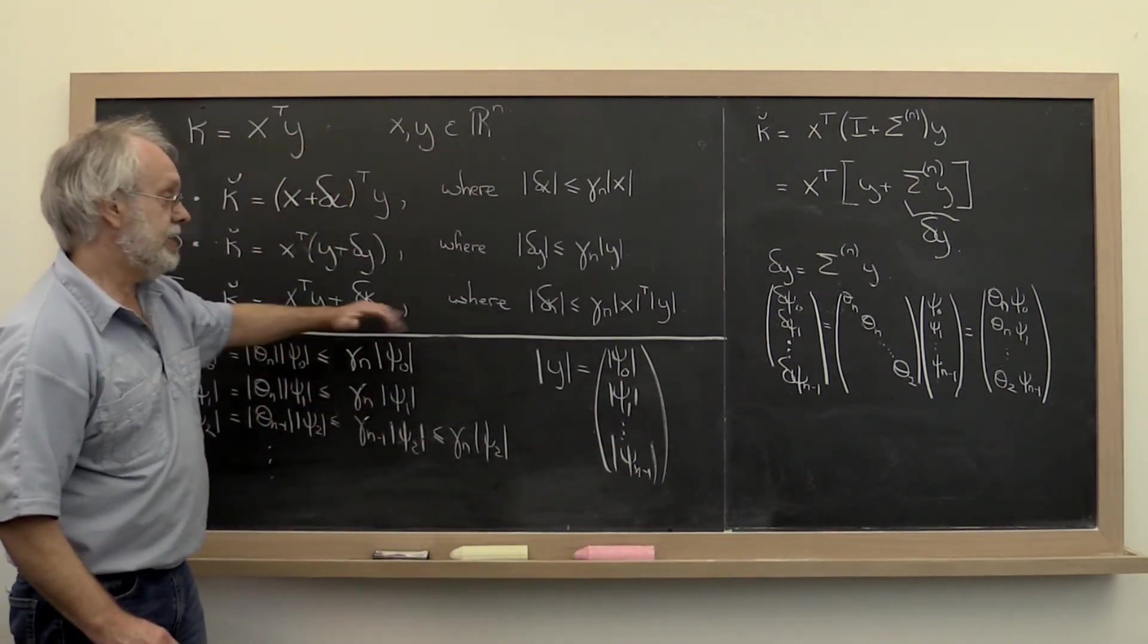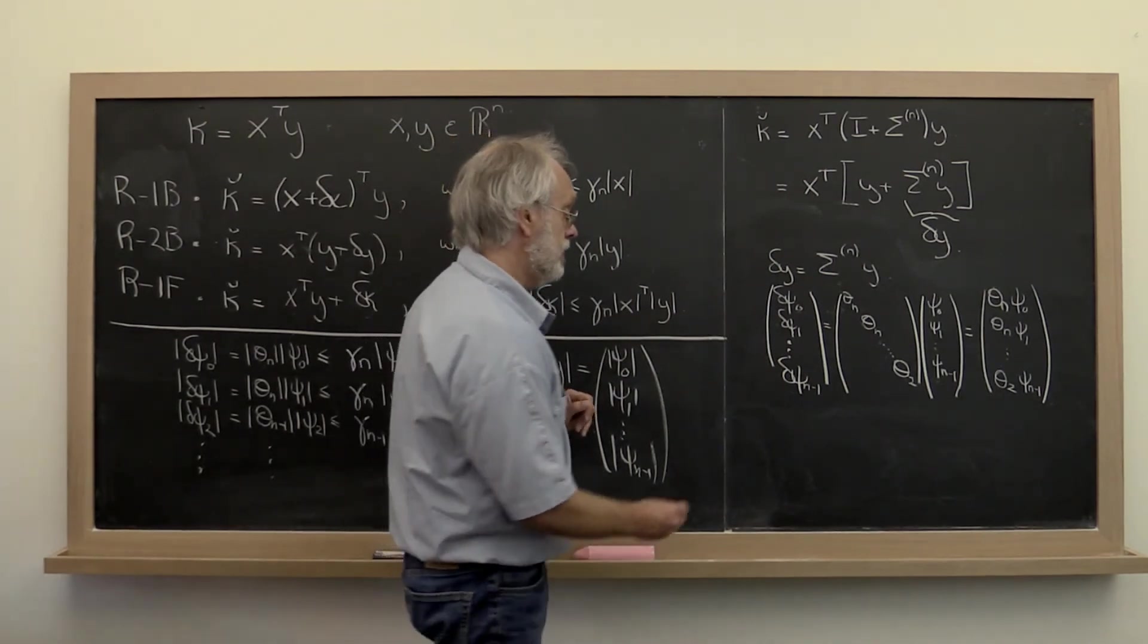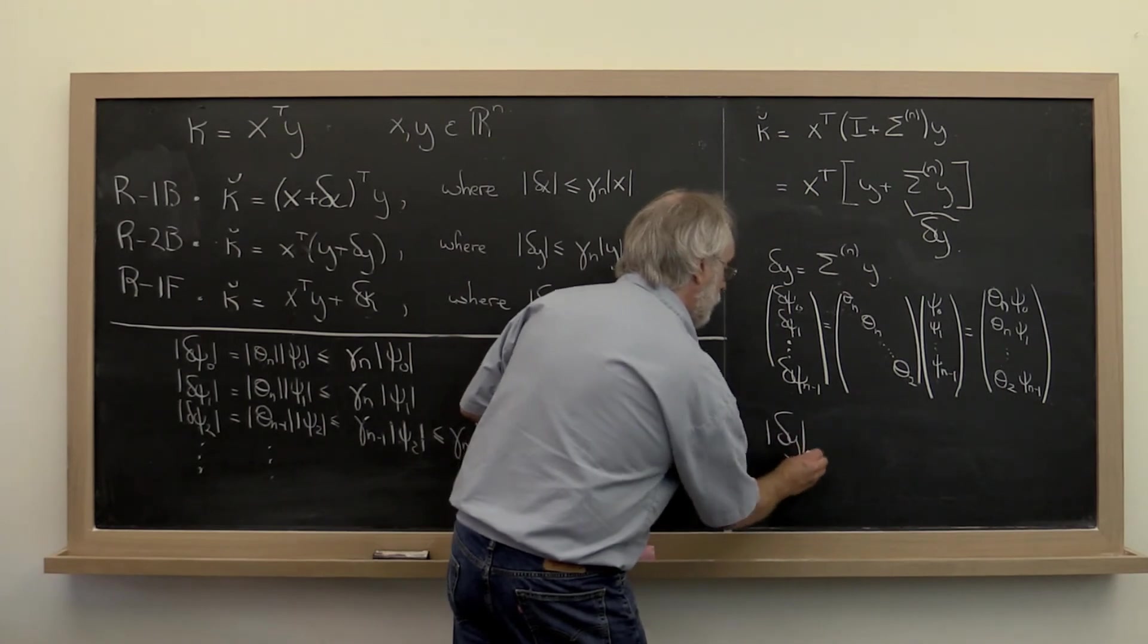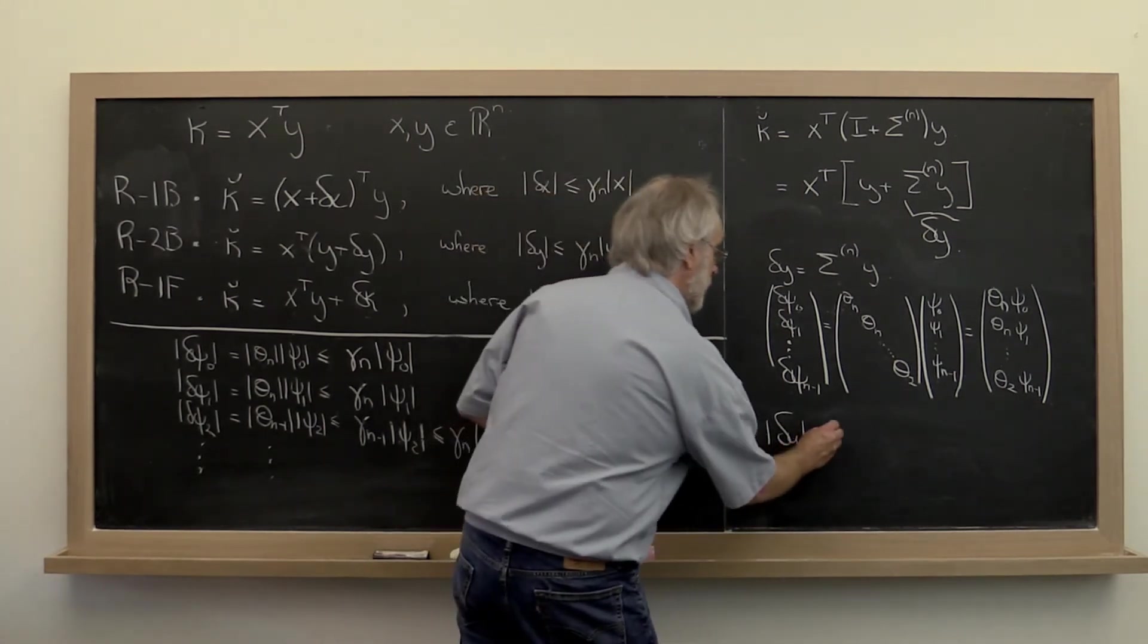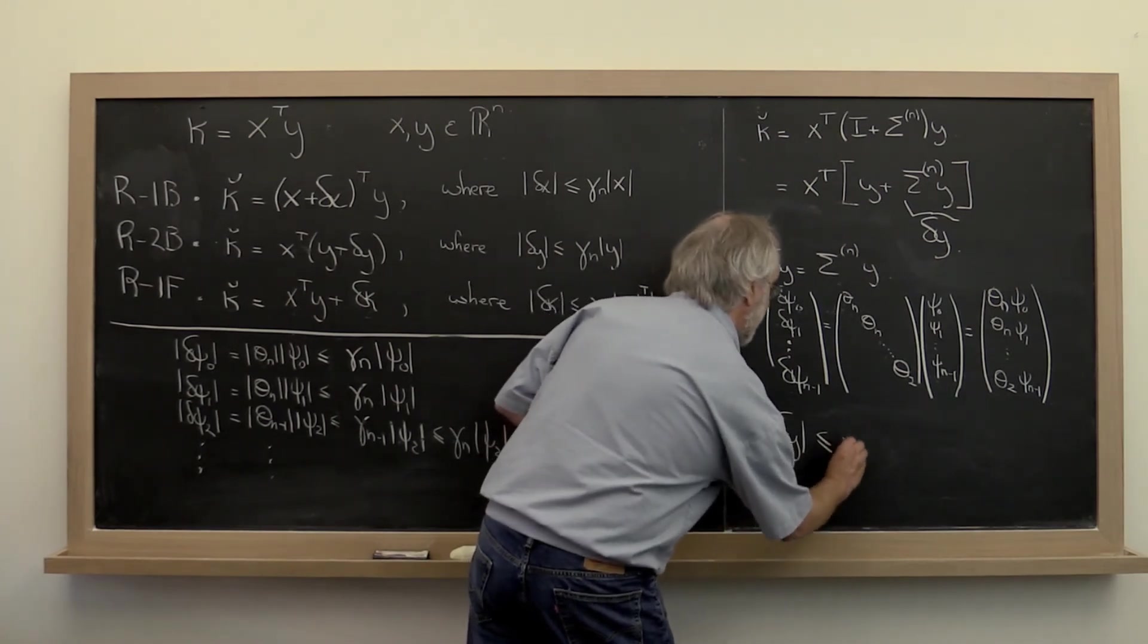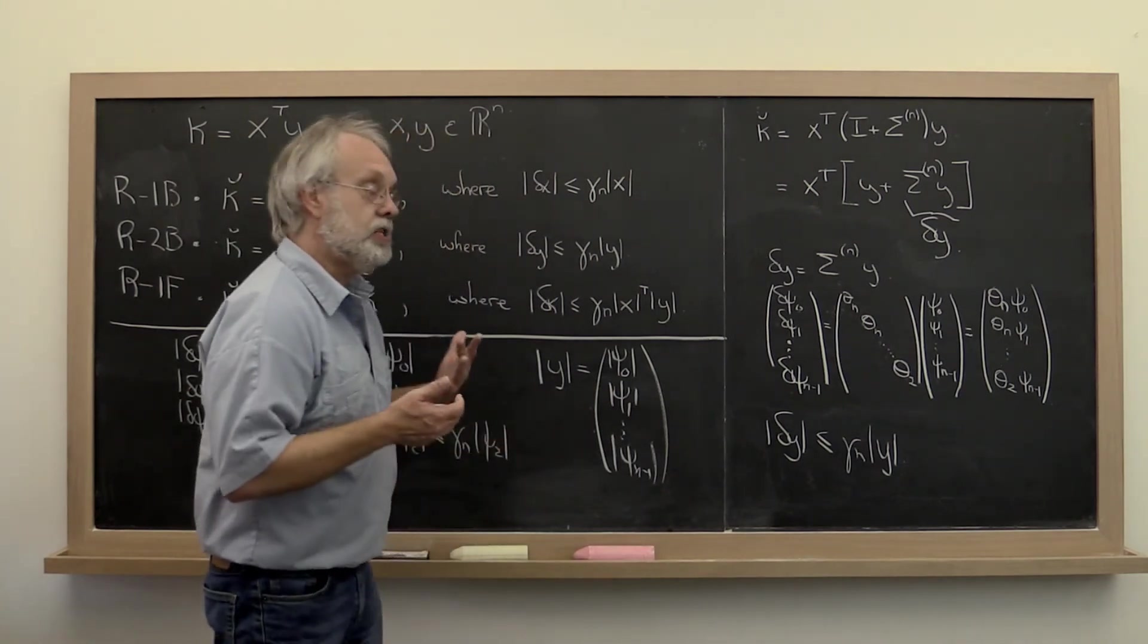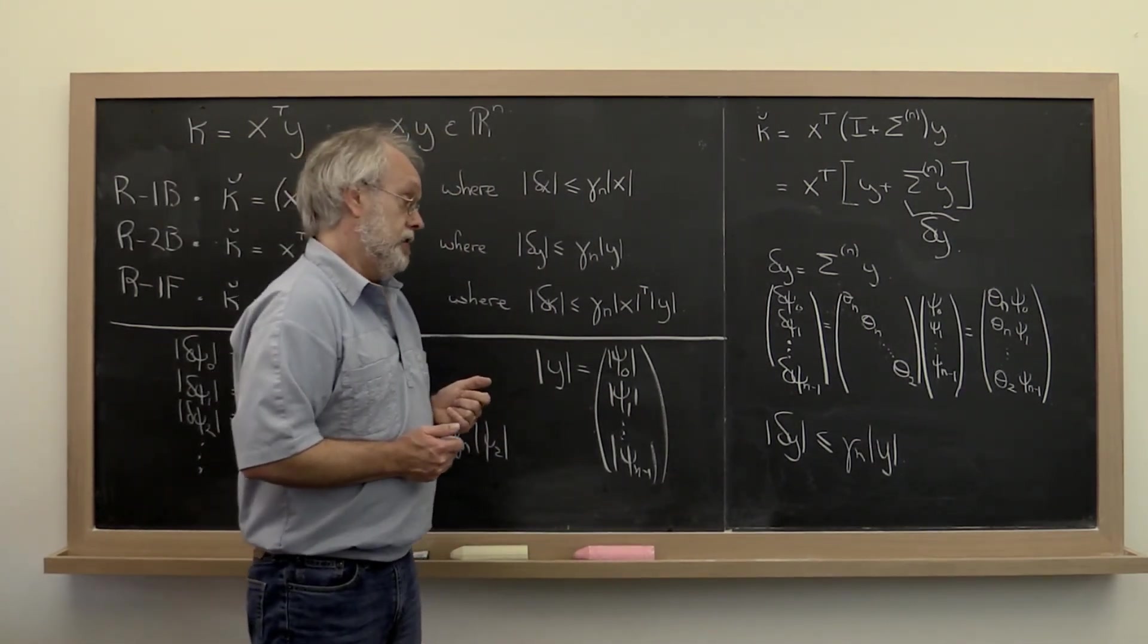...or correspondingly this observation right here and say that delta y in absolute value, the vector of absolute values is bounded by gamma n times the absolute value of y. And this is what we now call an element-wise error result.